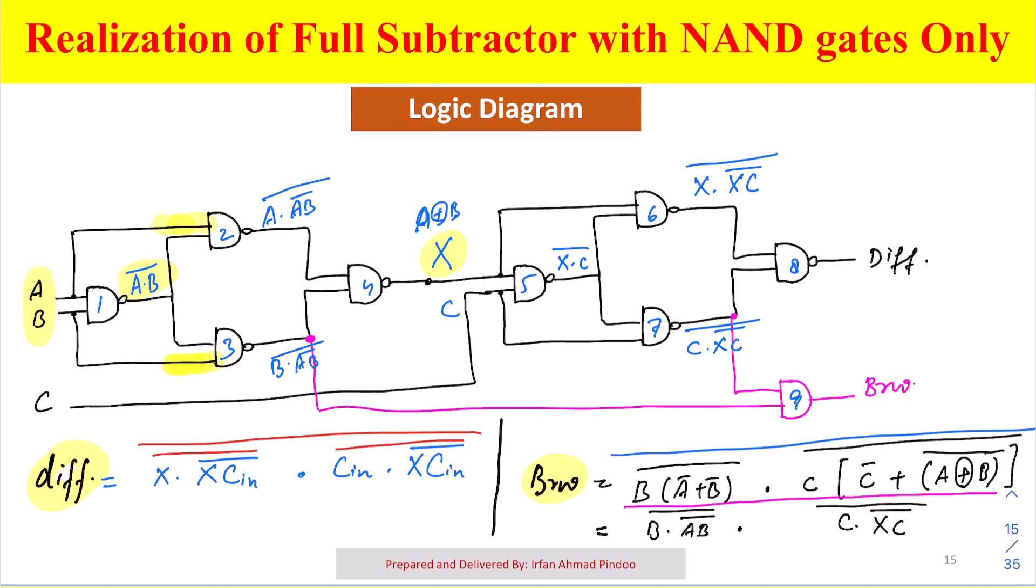Gate number two and three is having one of the inputs as A dot B whole bar. Then we are having A here, we are having B in gate number three. The outputs of gate two and gate three is given to gate number four, and in gate number four ultimate output we are getting is actually A XOR B. Now we have to do A XOR B XOR C, so we are copy pasting this gate one, two, three, four again over here.